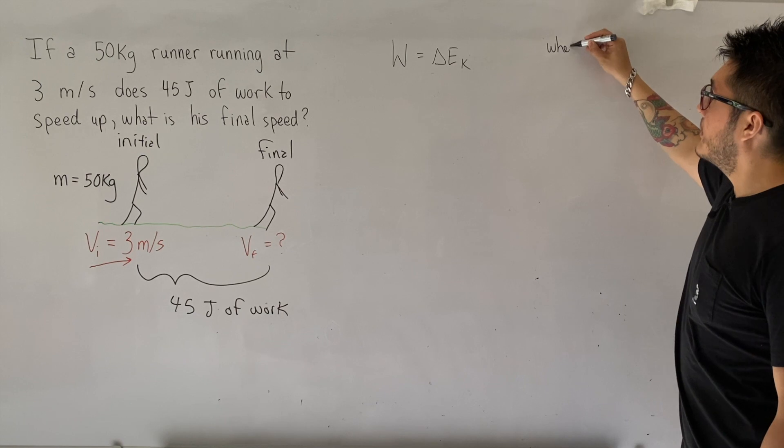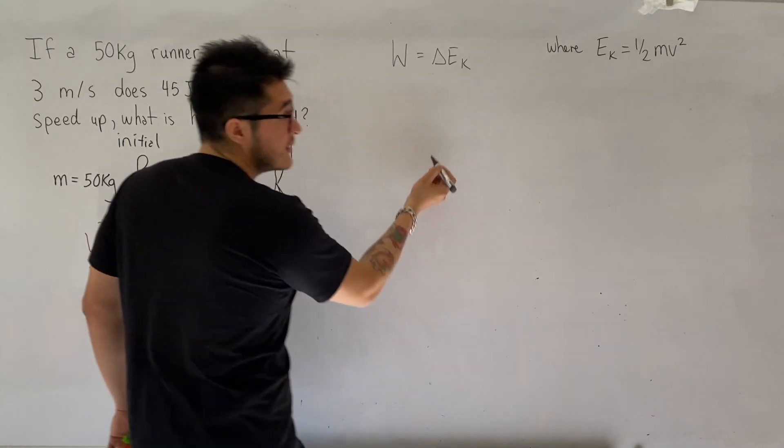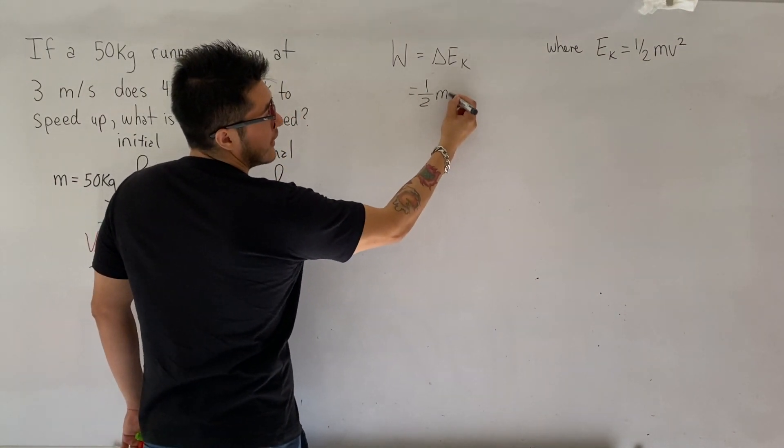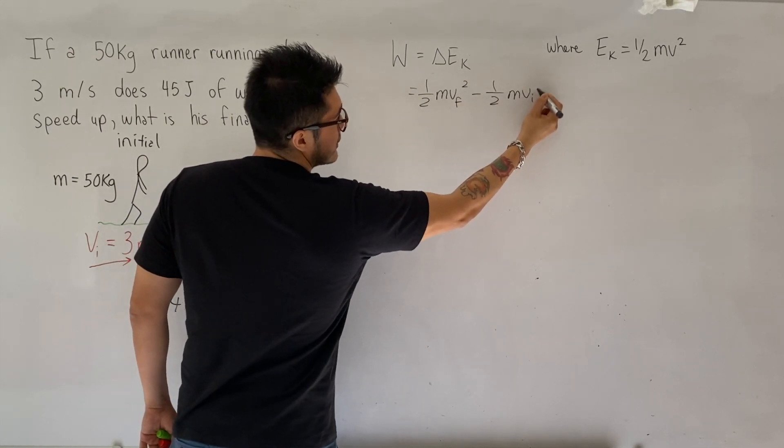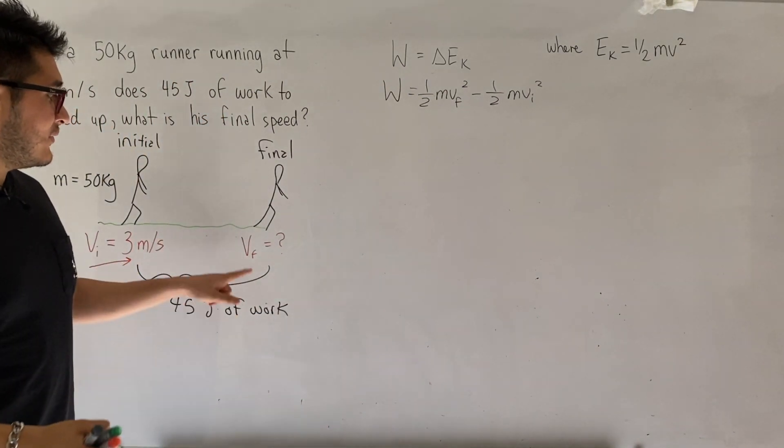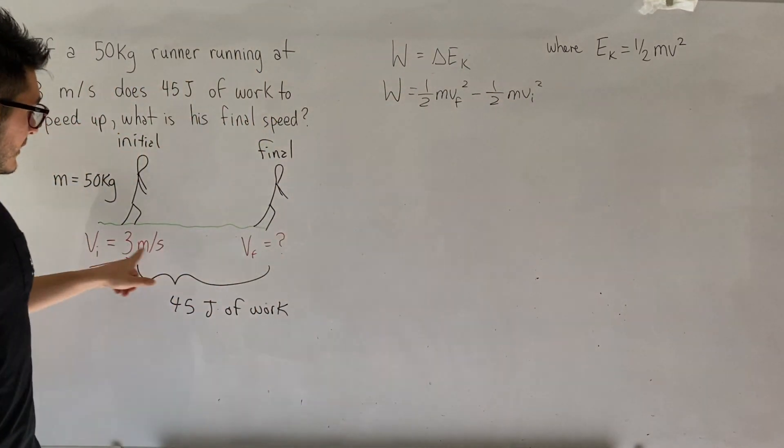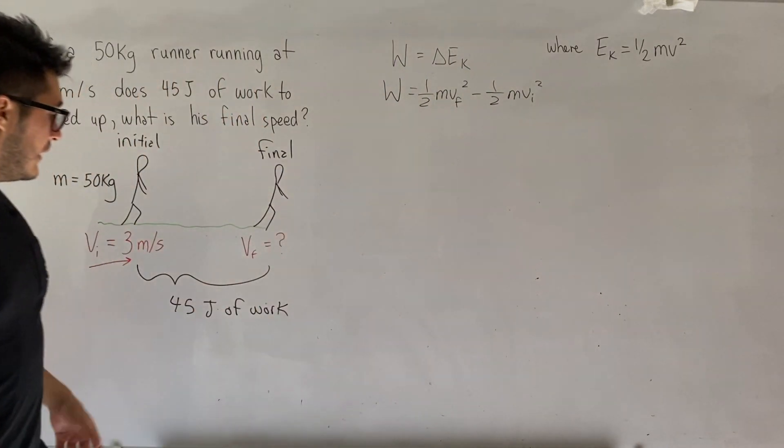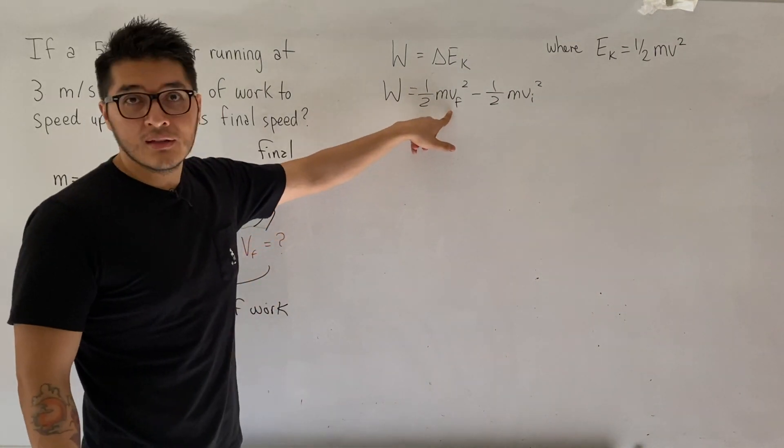So we're going to use the formula where Ek, kinetic energy, is 1/2 mv squared. So knowing this, the change in kinetic energy could be rewritten as 1/2 mv final squared minus 1/2 mv initial squared. So notice that it's a lot easier now to just calculate the final velocity, because we're given the mass, we're given the initial velocity, and the work done to speed up is 45 joules of work. So we just need to try to isolate for v final in this case.